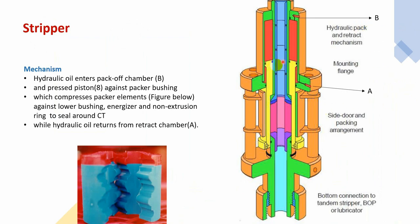The closing and opening mechanism of the stripper is operated by pumping hydraulic oil from this port, pushing against this piston so it compresses the pink stripping element. Here is the real picture — it consists of two separate halves and it deforms to form a seal around the coiltube. If we pump hydraulic oil from the other direction, it retracts the piston and releases pressure from the stripping element.